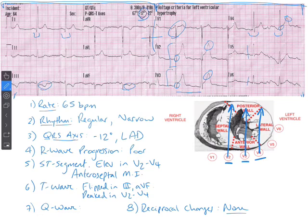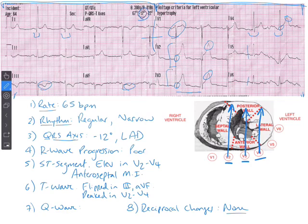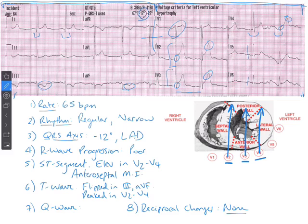We're done — we went through our eight steps and nitpicked it thoroughly. We have a pretty good idea of what's going on: an anteroseptal MI with signs of ischemia. This patient is going to require a decent amount of work. Follow your protocols for MI treatment, call ahead to the hospital, do a STEMI alert or STEMI activation per your department's protocol, and get this person to the hospital as quickly and safely as you can.